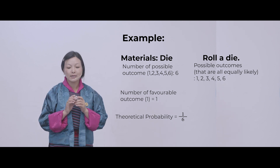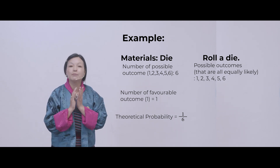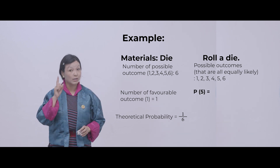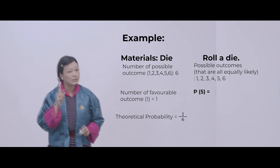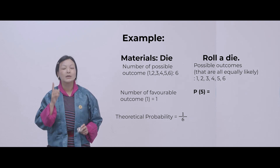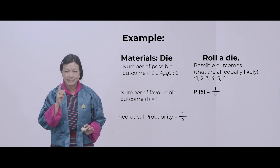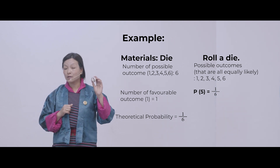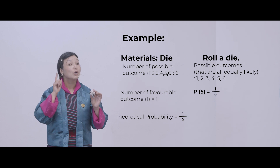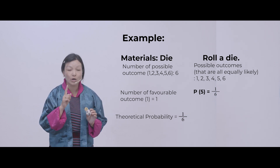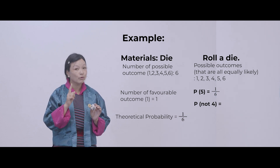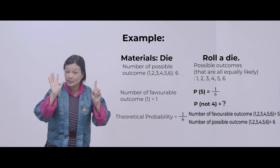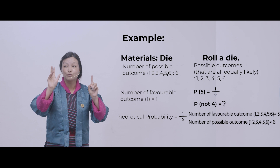Now let's say you want to find out the probability of getting number 5. How many 5s would be here? Only 1. So the theoretical probability would be 1 over 6. Now let's find out the probability of not getting number 4. There are 6 numbers — if you cut out 4, how many are left?